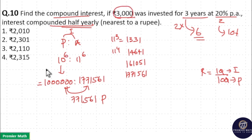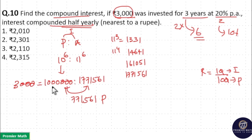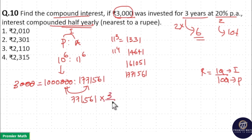Here 10 raised to 6 parts is given in this question as Rs.3000, that is, the principal is Rs.3000. So equate 10 raised to 6 parts with 3000: the zeros cancel, giving 1 part equal to 3 divided by 1000. Now multiply 1 part by 771561.